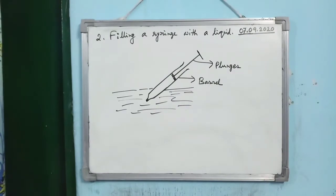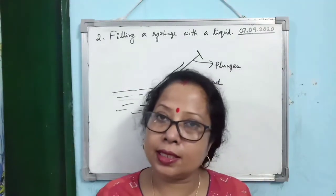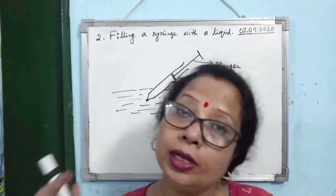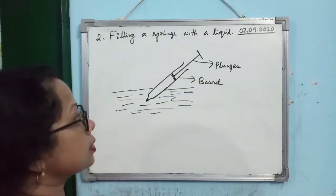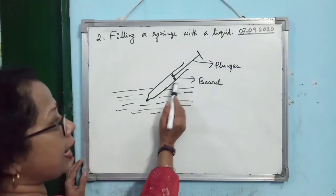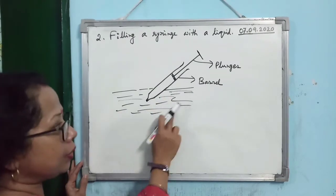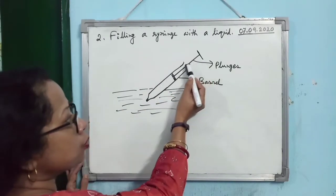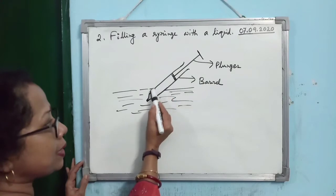The next example is filling a syringe with a liquid — whether an injection syringe or one used during Diwali. A syringe has a plunger and a barrel. First, put the barrel inside the liquid, then push the plunger in. The air present inside is pushed out through the fine nozzle.